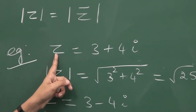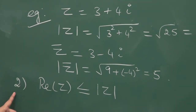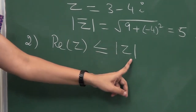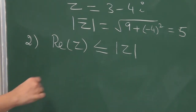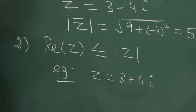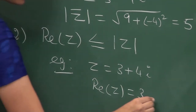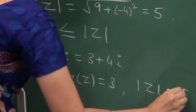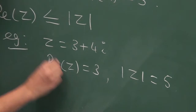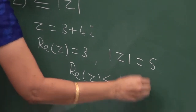The second property is: the real part of a complex number is always less than or equal to the modulus of that complex number. Let us consider one example using the same complex number 3 plus 4i. The real part of z is 3, and the modulus of z we have calculated is 5. Comparing these two, the real part is less than the modulus of z.